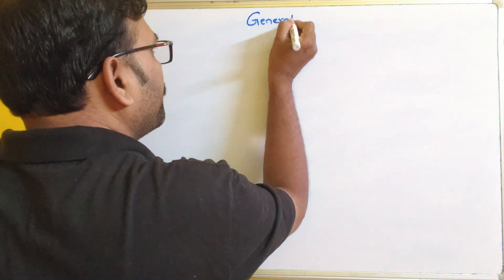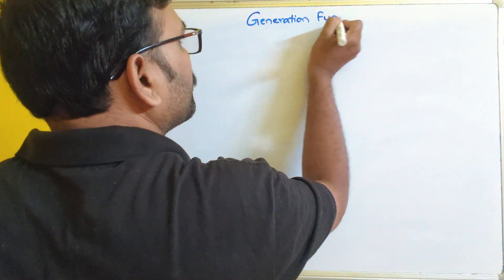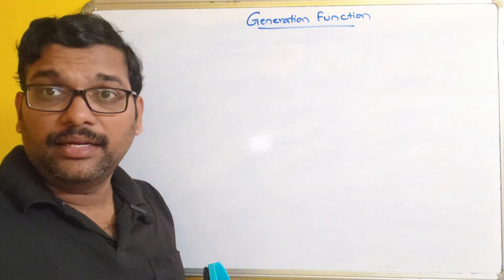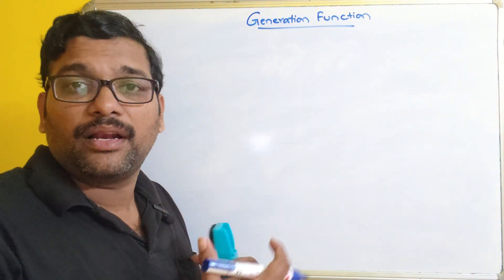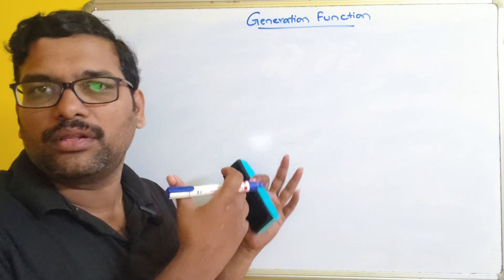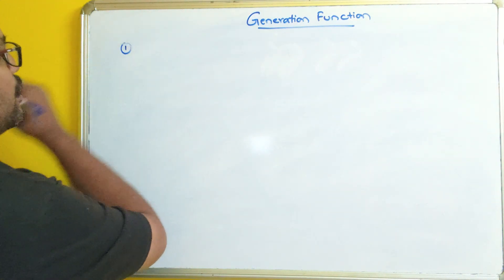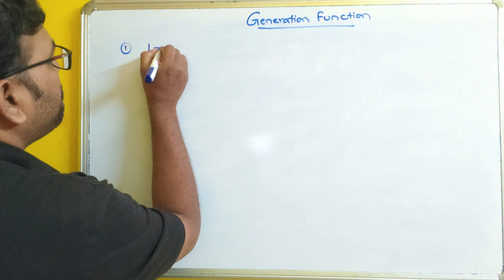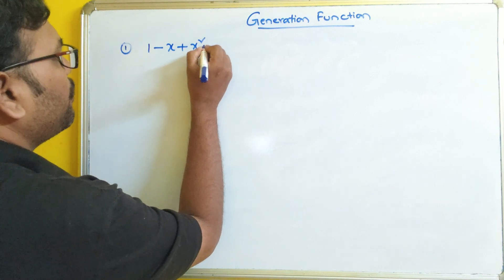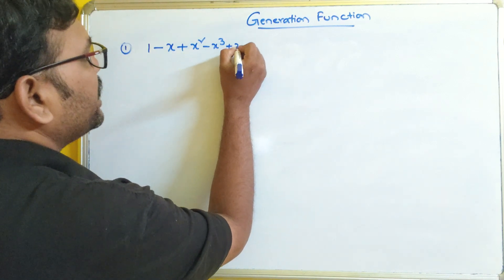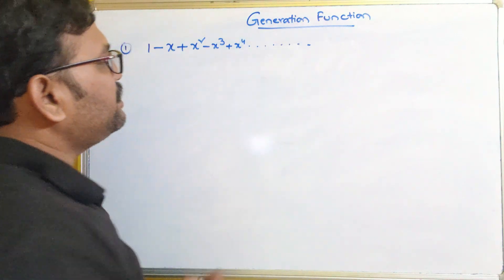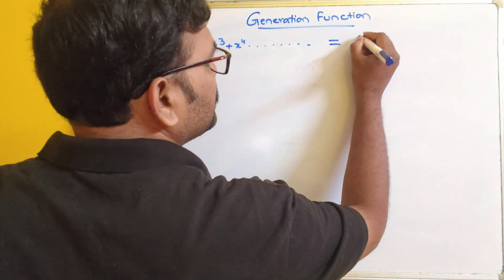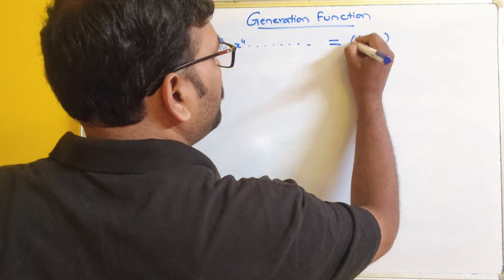So, generating function. Let us see a few formulas. If the given sequence is in a particular format, we can directly write the general solution or the function. The first one: if the sequence is in the form 1 minus x plus x squared minus x cubed plus x to the power 4 and so on, then that can be written as (1 plus x) to the power minus 1.